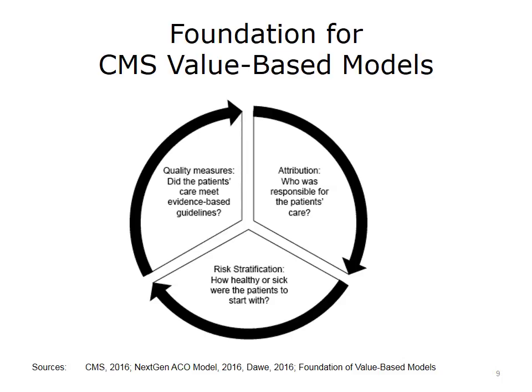Since beneficiaries are assigned based on their use of services during the performance year, the ACO doesn't get the finalized list of beneficiaries until after the end of the performance year. The assignment rules are different in the next-generation ACO model — those ACOs are told in advance which beneficiaries are assigned to them. A fair assessment of quality also takes into account how sick or healthy the patient was to start with. This brings us to the idea of risk stratification, which involves identifying the likely levels of patient health and care needs based on characteristics of the patient population.